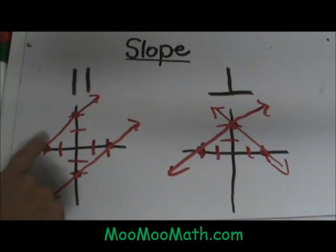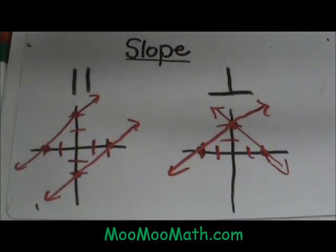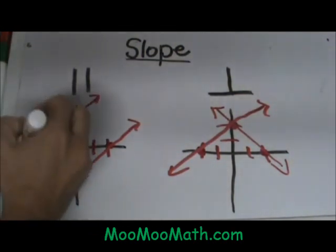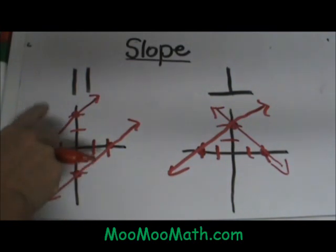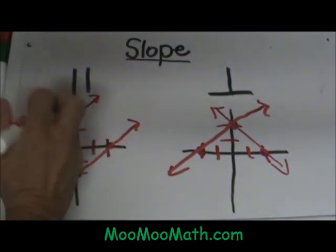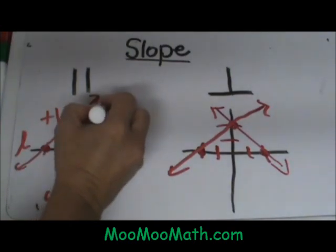In this case this first line has a slope of up 2 over 2. This slope is positive 1. 2 over 2 is 1.